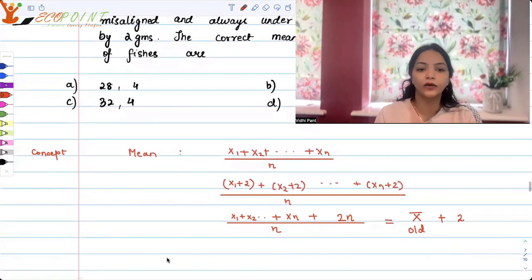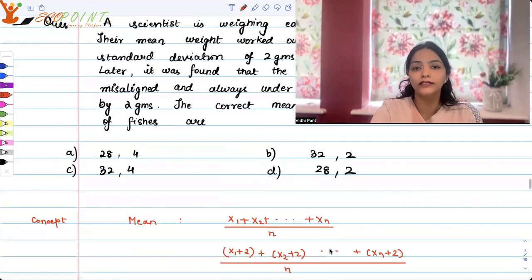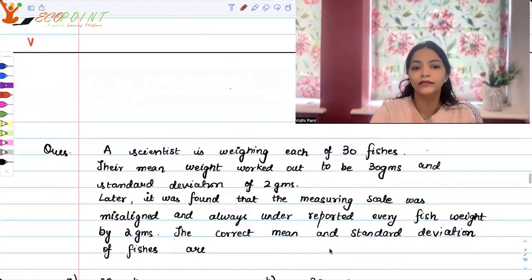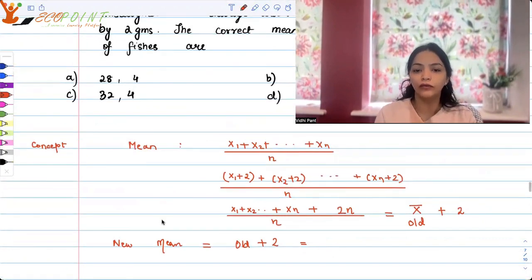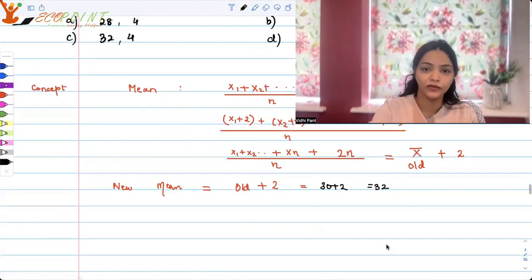Which means that your new mean has to be old mean plus 2 because in old mean all our observations were under reported. So your old mean, it's given to you that the mean worked out to be 30. So if old mean was 30, then the new mean is 30 plus 2, that is 32. So clearly we have our answer, 32 is the mean.